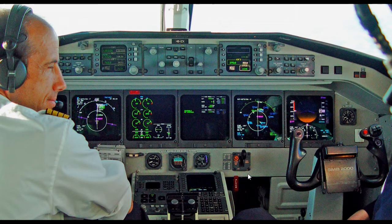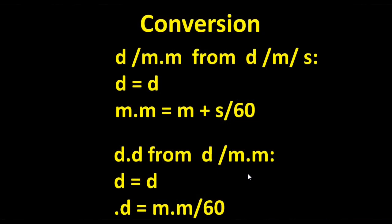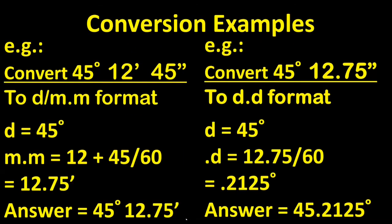It is important to be able to convert the various formats of latitude and longitude on the fly. While there are apps that will do this for you, it is actually a pretty easy process you can do with paper and pencil. Remember, there are 60 minutes in a degree and 60 seconds in a minute. To calculate degrees decimal minutes from degrees-minutes-seconds, the degree and minute figures remain the same, while the decimal part of the minute is calculated by dividing the number of seconds by 60. Similarly, calculate decimal degrees from degrees decimal minutes by maintaining the degree figure and calculating the decimal part of the degree by dividing the decimal minute by 60.